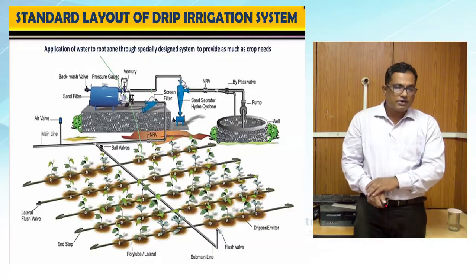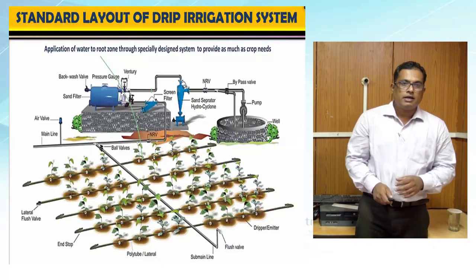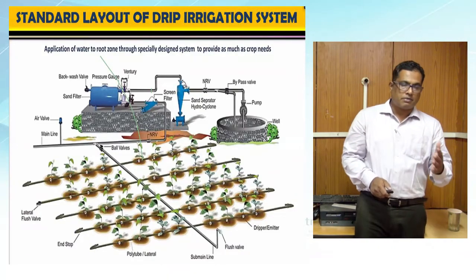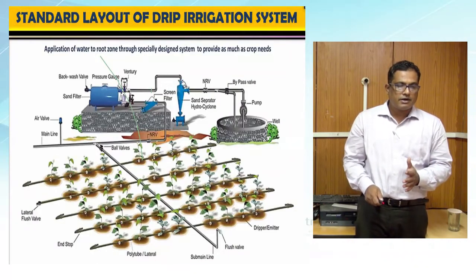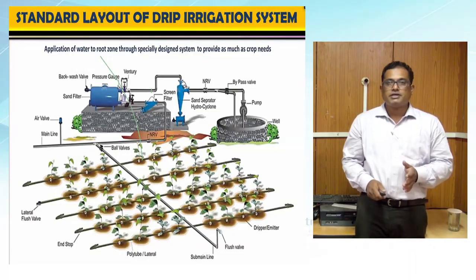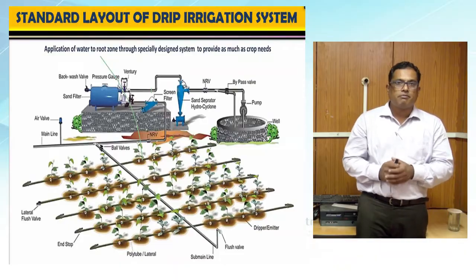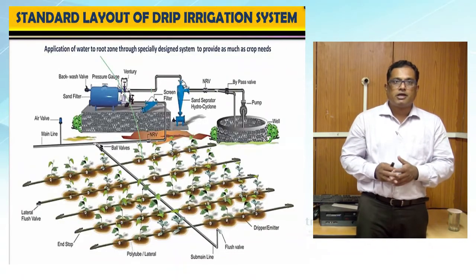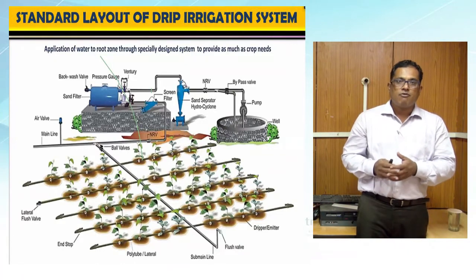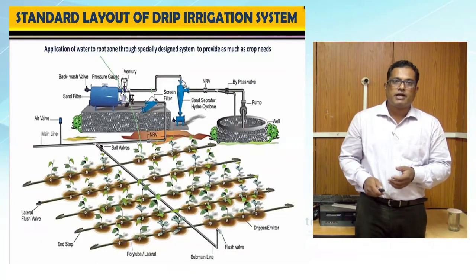After the pre-filter, water goes to the filtration unit, where filtration is completed in two parts: primary filtration using a media filter, and secondary filtration using a screen filter. Before that, there is a fertigation unit. We have already discussed that the full benefit of drip irrigation cannot be realized without administering fertilizer along with irrigation water, so we use a venturi or fertigation tank.